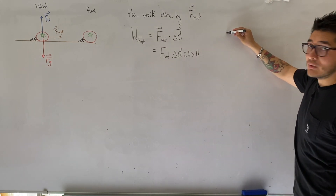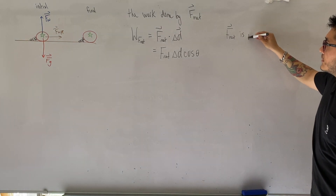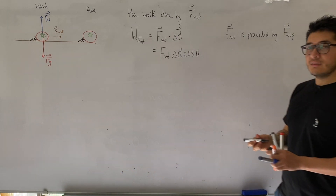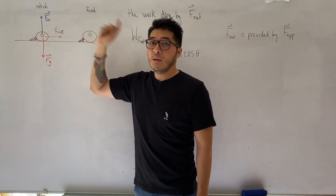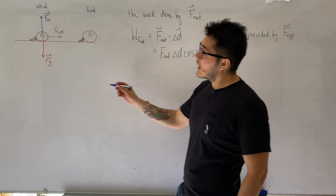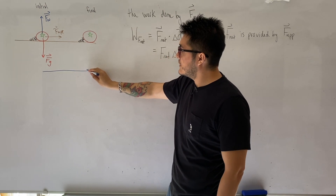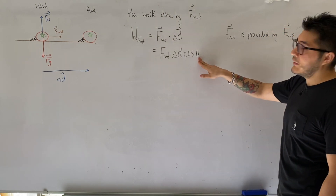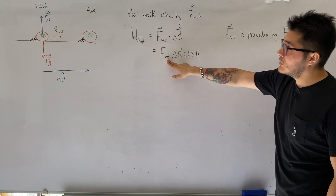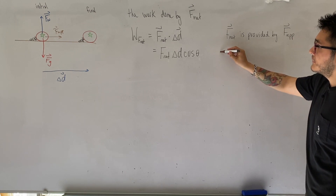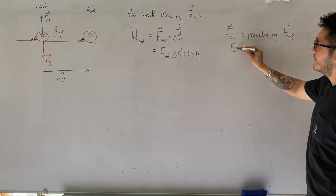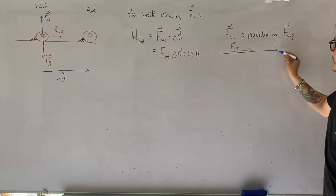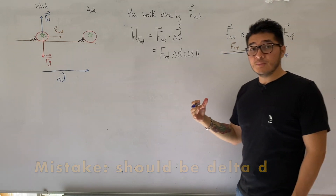So the net force is entirely provided by the applied force, which is to the right. We can conclude this because no vertical motion is occurring, so gravity and the normal force must be balancing each other out. The tomato is being pushed to the right, so our displacement vector is also directly to the right. A good strategy is to find the angle theta when the force and displacement vectors are joined tail to tail.